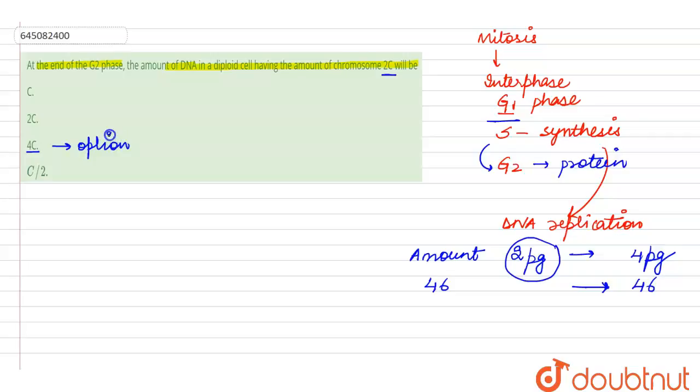So option number 3 becomes the right answer for this question, whereas the other options given here are the wrong ones. This is all about this query so we can mark option number 3 as the right answer. Thank you.